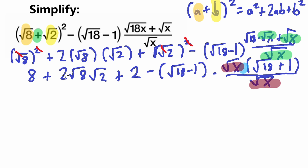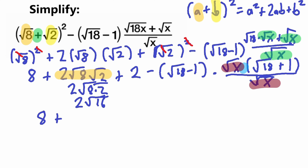Another rule of square roots is that if you're multiplying two square roots together, you can multiply the insides and put it under one square root. So 2 times square root of 8 times square root of 2 becomes 2 times square root of 16. Square root of 16 is simply 4. So that becomes 2 times 4, which is 8. Our expression now becomes 8 plus 8 plus 2, which gives us 18.